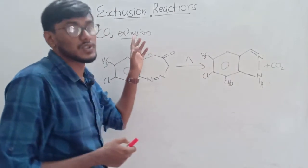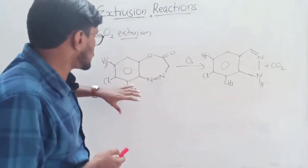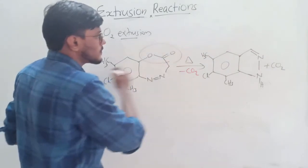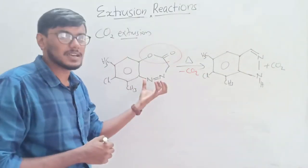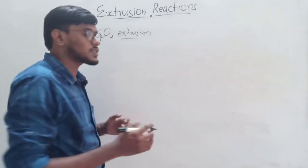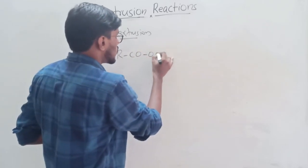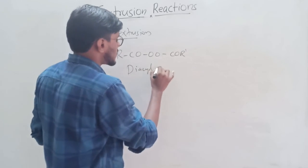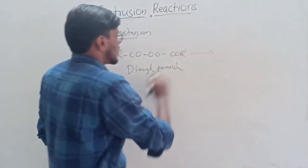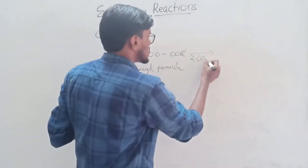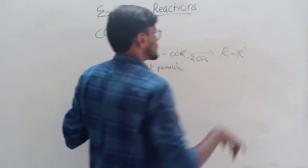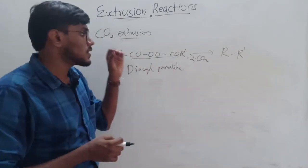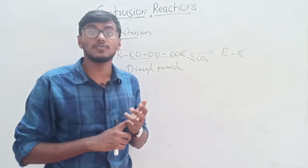Next is the extrusion of CO2. Here a lactone undergoes CO2 elimination and forms the corresponding product. Another example is a diacyl peroxide, which undergoes extrusion reactions where two CO2 molecules are extruded and forms the product R-R'. So here two CO2 molecules are expelled.